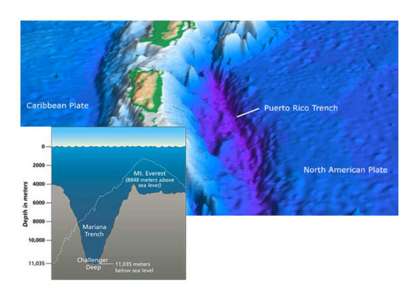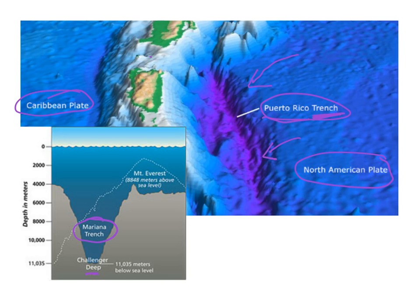Not to be confused with a canyon, we can also have submarine trenches. Here we have the Puerto Rico Trench, where we have a plate being subducted or going under another plate — in this case the North American and Caribbean plates interacting in a subduction zone, causing volcanic activity that forms some Caribbean islands. Another example is the Mariana Trench, which marks the deepest part of the ocean called the Challenger Deep at 11,000 meters below sea level. If you set Mount Everest — only about 8,800 meters tall — in there, it would still be entirely submerged.